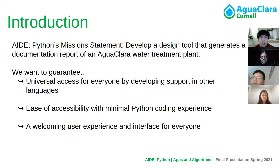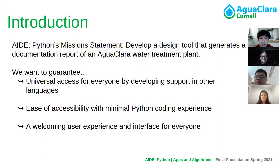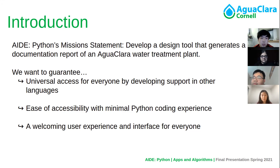We have some core tenants that we try to adhere to in all the projects that we do, which includes universal access for everyone who uses the software by developing and supporting the software in multiple different languages such as English and Spanish. We also want to ensure the ease of accessibility of the software, so that even people without Python or coding experience are still able to use the AgaClora water treatment plant tools without needing to understand the underlying code. Finally, we want to ensure a user experience and interface that allows anyone to have a seamless experience on the platforms that we make.